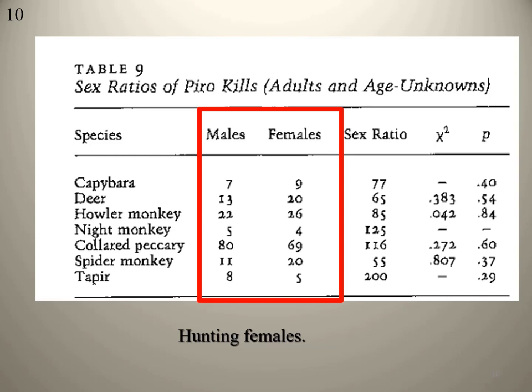The statistical values — the chi-square and the p-value — show no significant difference between prey choice. Hunters weren't purposely trying not to kill females or purposely hunting males rather than females. If you have a p-value of less than .05, that means there's less than a 5% chance the difference between males and females hunted is due to random chance. A p-value of .05 or less would suggest hunters were intentionally killing more of one sex than the other — indicating intentional conservation. But we see no statistically significant difference.